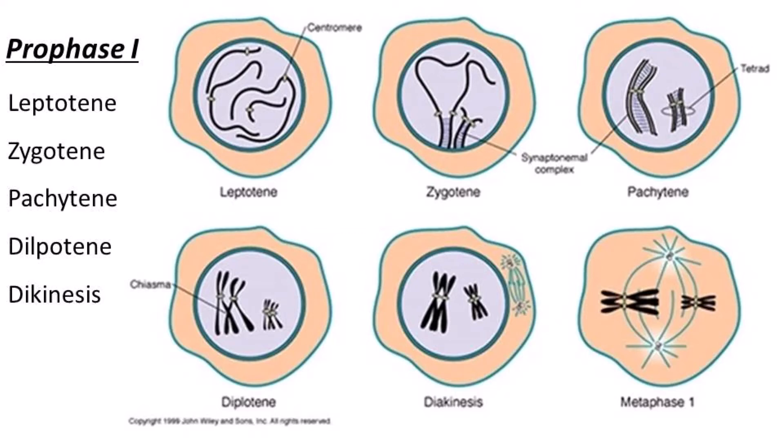Fourth stage is diplotene. 'Diplo' means getting double. During diplotene, the synaptonemal complex dissolves and the homologous chromosomes of the bivalent separate, except at the point of crossing over. Thus it looks like an X-shaped structure called the chiasmata.